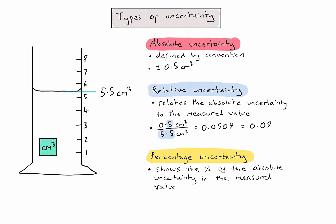Finally, to calculate the percentage uncertainty, I do the same calculation as for relative uncertainty but multiply it by 100 to give my answer as a percentage. Being consistent with significant figures, I need to give my final answer to one significant figure as well, which is plus or minus 9%. That's a simple explanation of how we identify absolute uncertainty, and then how we can calculate relative and percentage uncertainty using that value.